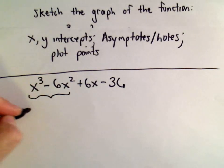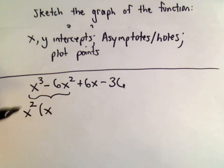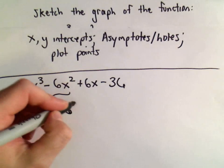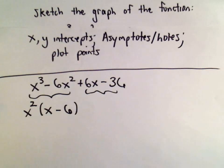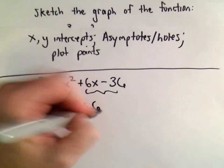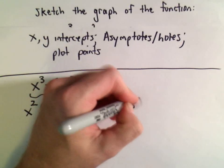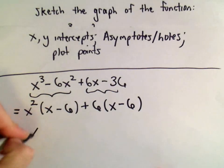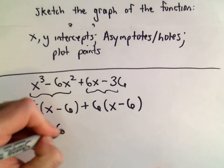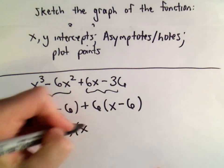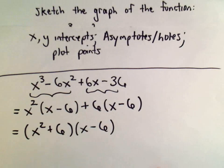From the first two terms we could factor out an x squared: x squared times x gives us x cubed, and x squared times negative 6 gives us negative 6x squared. Then from the second two terms we factor out a positive 6, leaving us with x minus 6. So we take the x squared and the positive 6, put those in one set of parentheses, and multiply by the common factor x minus 6.